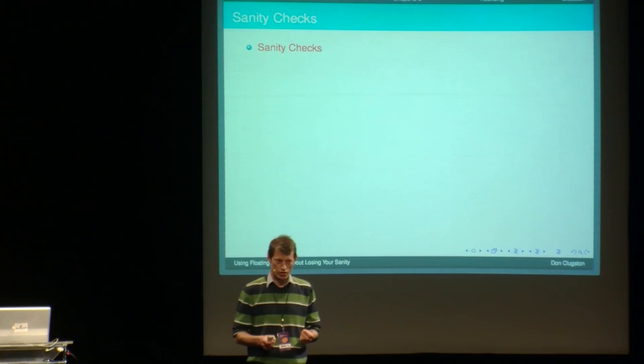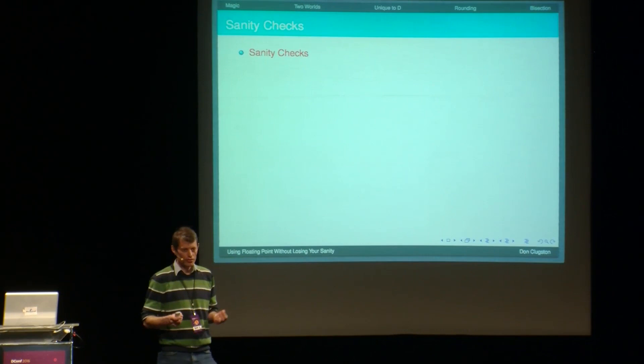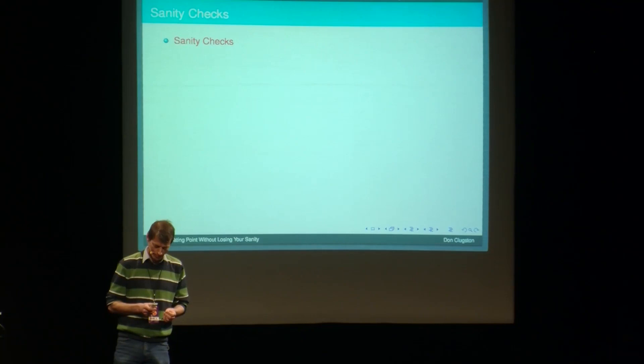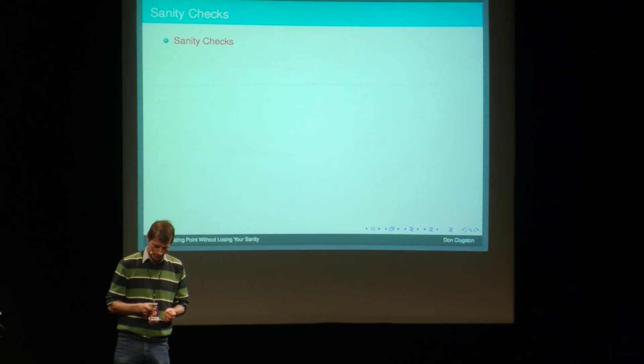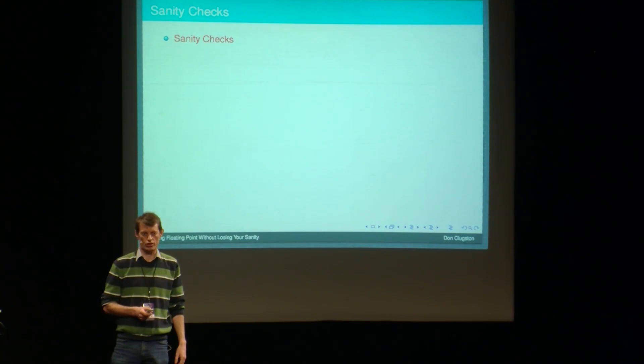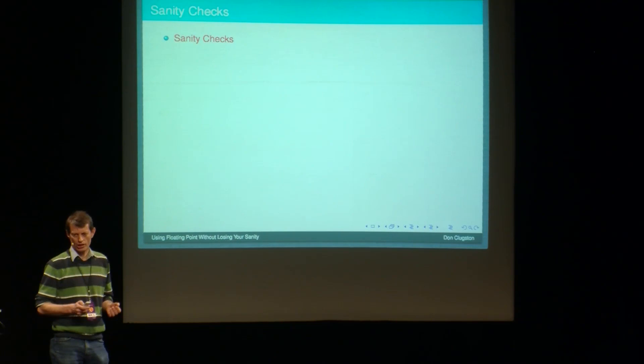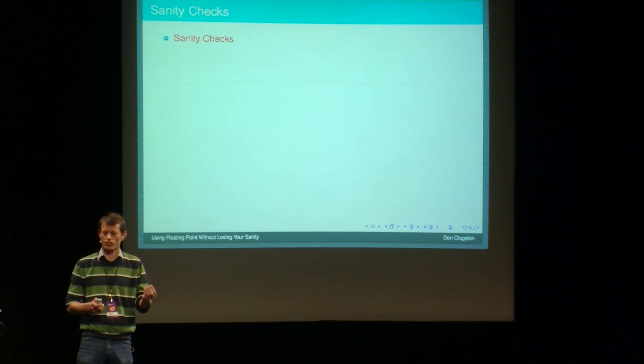I've called this talk Using Floating Point Without Losing Your Sanity, because my first experiences with floating point as a young programmer were disturbing. I had written code that was obviously correct. It was so simple, it was obviously correct, and it didn't work. And so I was sure that everything was correct, and it wasn't. Something I was sure of was wrong. I failed my own sanity check.